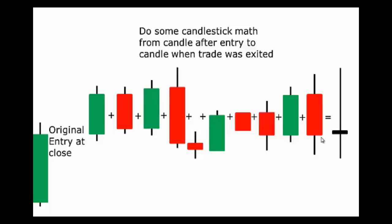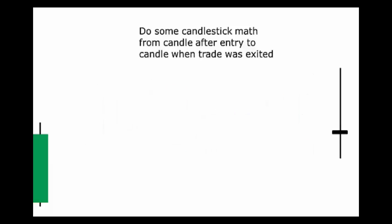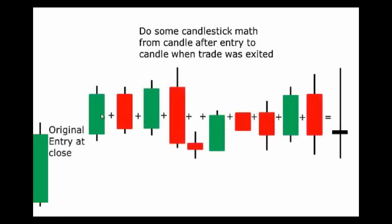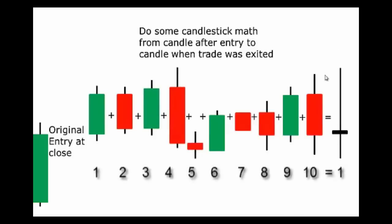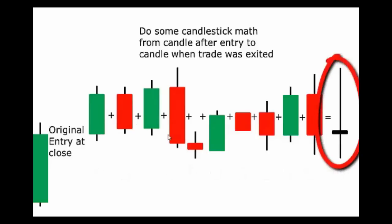That's really the summation of why candlestick math can be helpful. If you keep that in mind and you have a nondescript candle, you add them all together and you can see that those ten bars added together just equaled one bar which was relatively neutral.